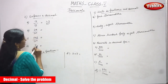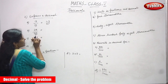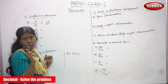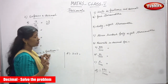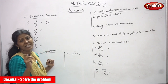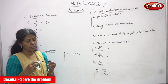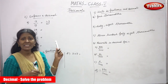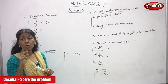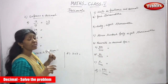Next is 27 by 100. Here the denominator has 2 zeros, and the numerator 27 has 2 digits. So there is no problem — the number of digits matches the number of zeros.